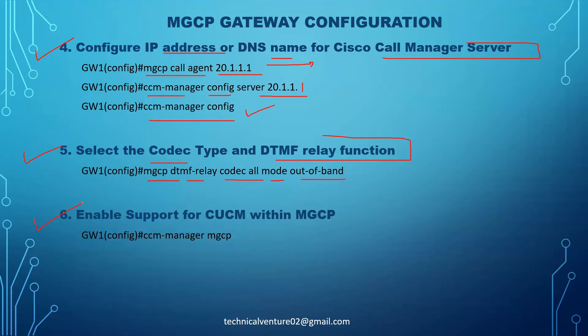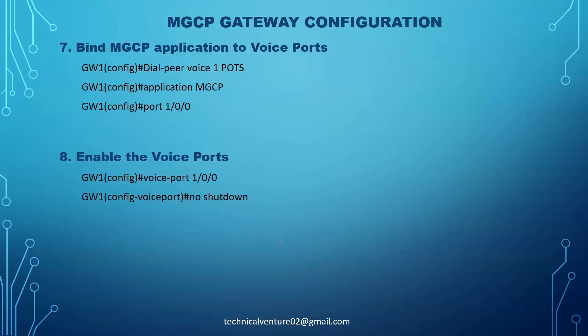Step six is to enable support for CUCM within MGCP. We use the command 'ccm-manager mgcp' — it will enable the support for CUCM. Then step seven is to bind the MGCP application to voice ports. Under the dial-peer voice port configuration, you put the command 'application mgcp', which binds that MGCP application to that particular port. We enter port number 1/0/0.